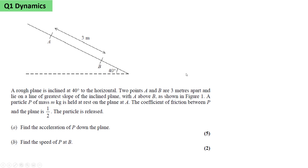A rough plane is inclined at 40 degrees to the horizontal. Two points A and B are 3 metres apart and lie on the line of greatest slope of the inclined plane, with A above B. A particle P of mass m kilograms is held at rest on the plane at A. The coefficient of friction between P and the plane is a half. The particle is released.